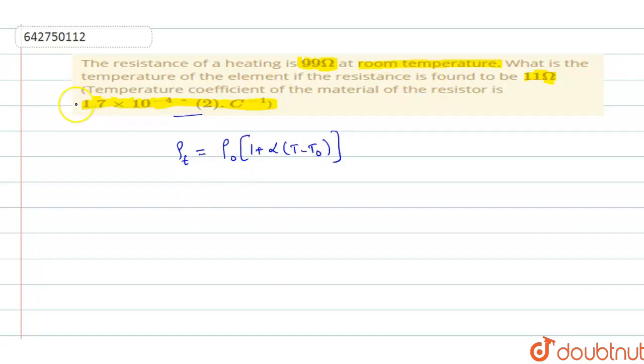From the equation rho is equal to R A by L, you can say that rho is directly proportional to the resistance. So, you can write the same equation in terms of R as R T is equal to R 0 into 1 plus alpha into T minus T 0.